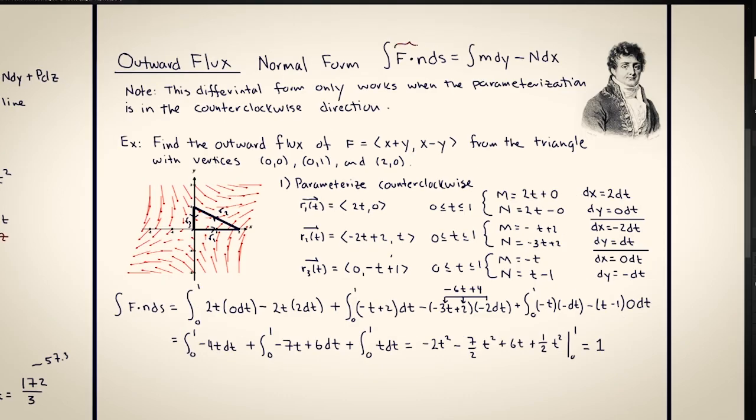The units of flux density are liters per minute per meter, and the units of ds are meters. So when you multiply them together, the meters should cancel, and the final units in this should be liters per minute.